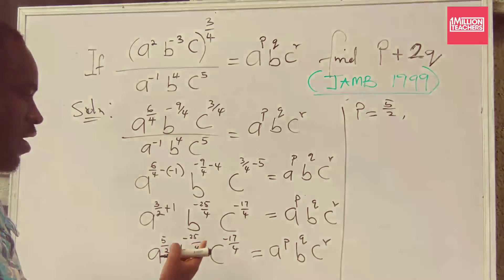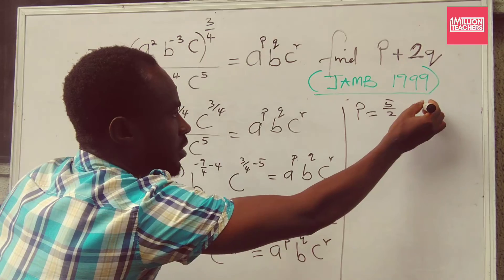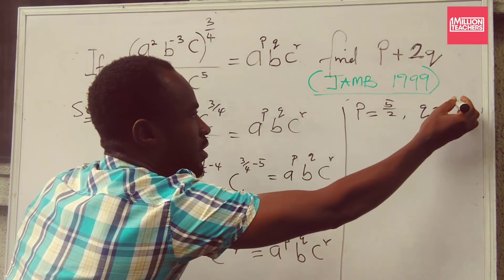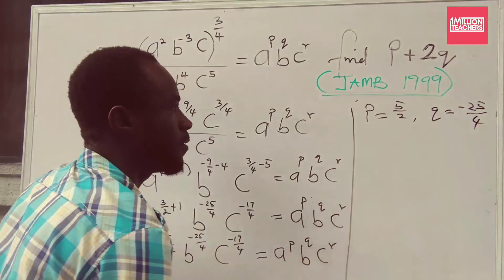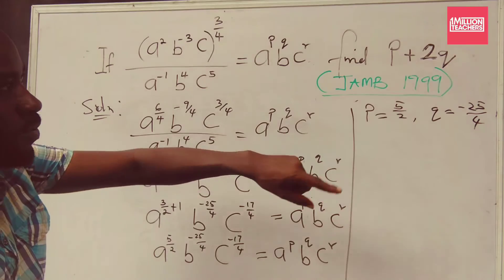And then also having that my Q will be equal to this. So which means that my Q is equal to minus 25 over 4. So I think this is just what we need.